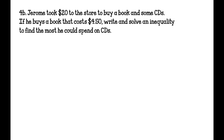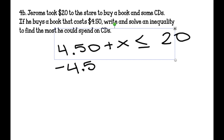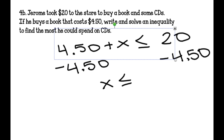Jerome took $20 to the store to buy a book and some CDs. The book costs $4.50. So 4.50 plus X must be less than or equal to 20, where X is the amount he can spend on CDs. Subtract $4.50 from both sides and you get X is less than or equal to $15.50 — the most he can spend on CDs.